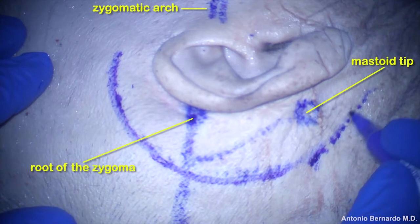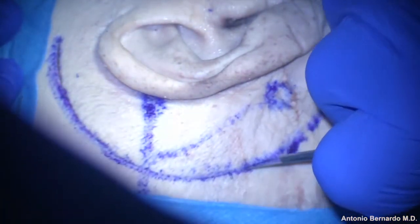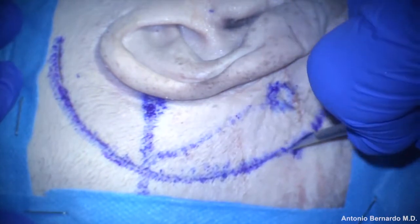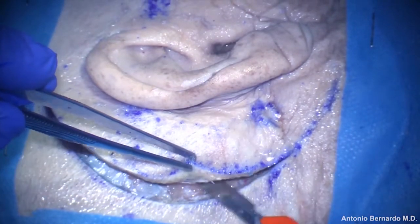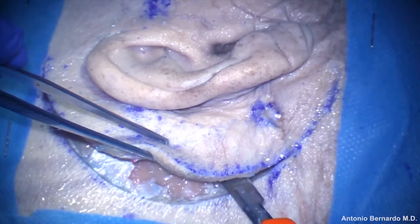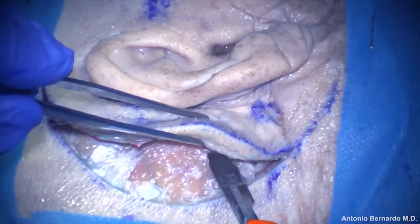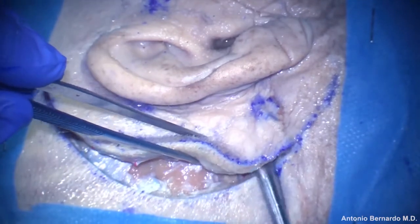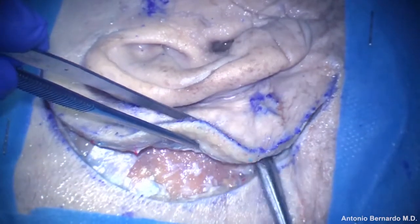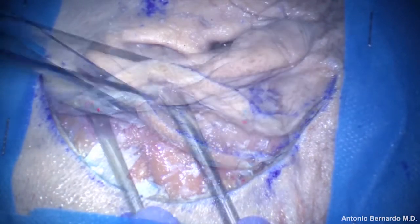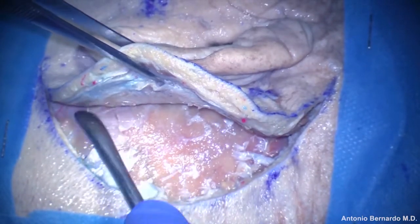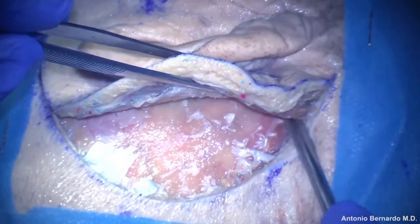A C-shaped scalp incision is started above the pinna of the ear, curving posteriorly and inferiorly behind the body of the mastoid and below the mastoid tip. The skin flap is elevated and reflected anteriorly, and the periosteum is carefully detached from the bony surface, uncovering the root of zygoma and the mastoid tip.